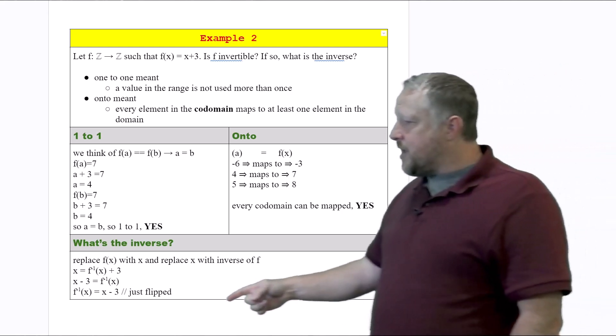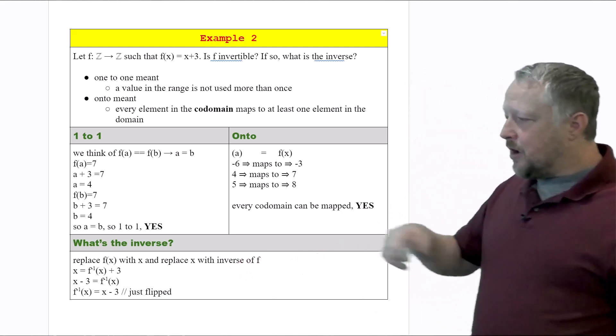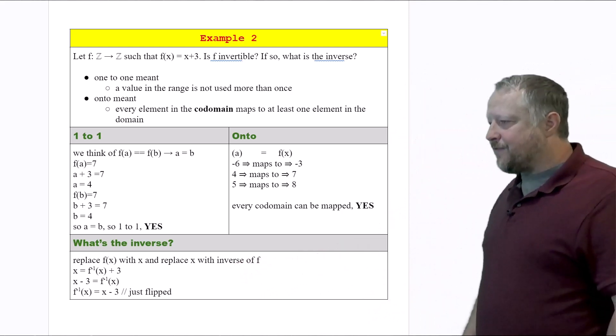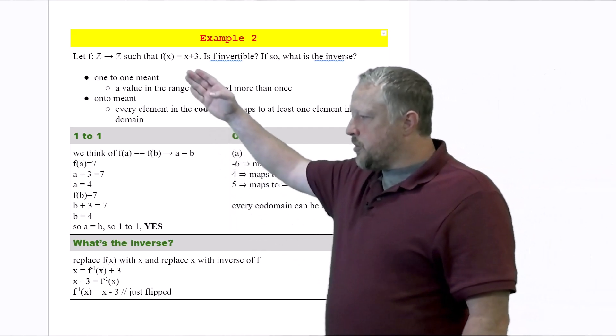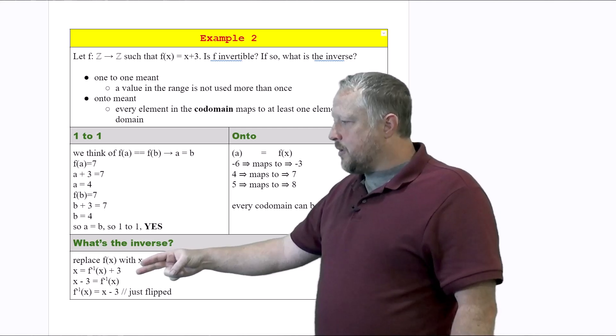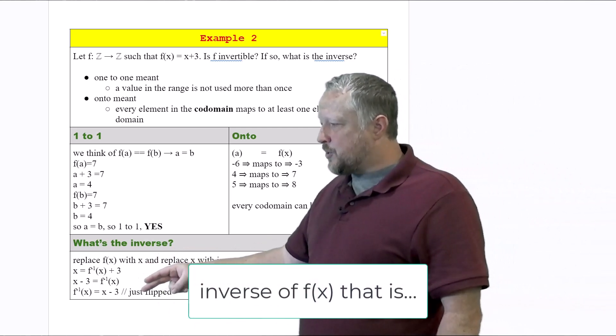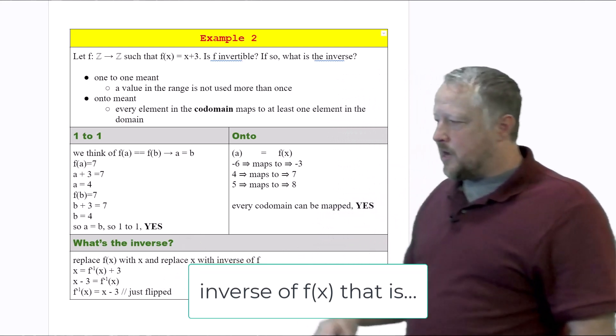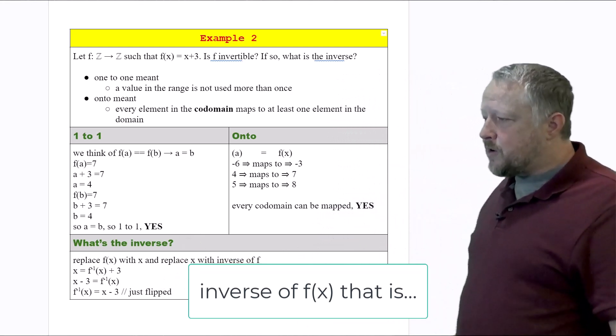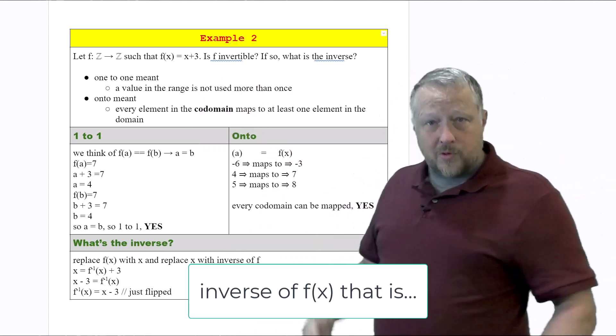All we do is replace the f of x with x and replace x with the inverse of f. So notice this was the original equation. I did exactly what the instructions are telling me here. So I go ahead and try to move f of x into one side, and basically I do that. I just flip it sides here on the last line to make it easier for us to read. So f of x is going to be x minus three, which frankly, hey, that should make sense. So we're in good shape.